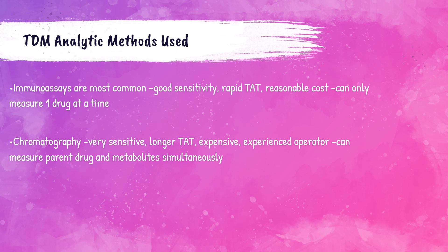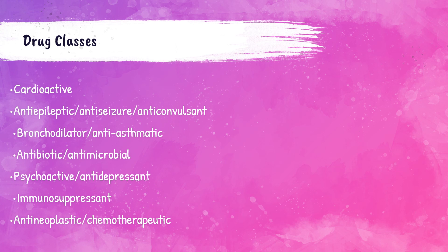Currently, immunoassays for each individual drug are the most common testing types for TDMs in the clinical laboratory. These methods have quick turnaround time, are relatively inexpensive, and have good sensitivity. Chromatography can also be used for TDMs. This method is very sensitive, takes longer than immunoassay methods, and is much more expensive. Chromatography is usually used for measuring the drug and its metabolites.